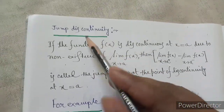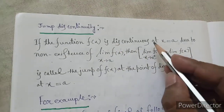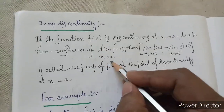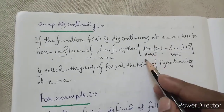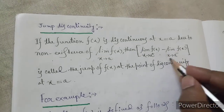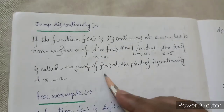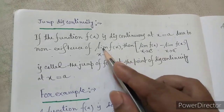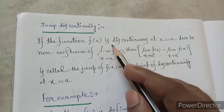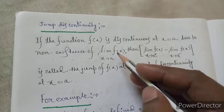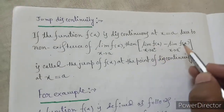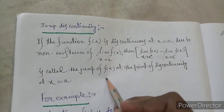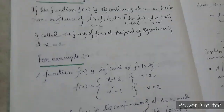Today's topic is jump discontinuity. If the function f(x) is discontinuous at x equal to a due to non-existence of the limit of f(x) as x tends to a, then the value — that is, the right-hand limit minus the left-hand limit — is called the jump of f(x) at the point of discontinuity at x equal to a.